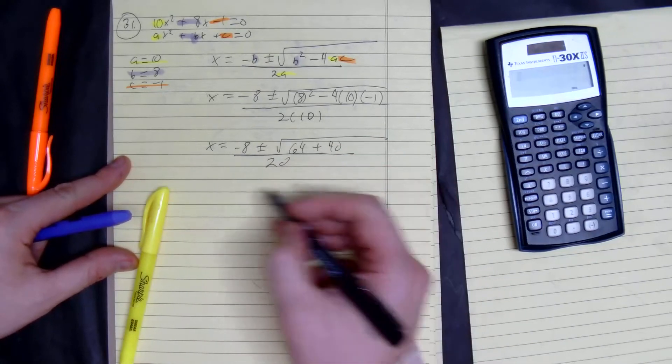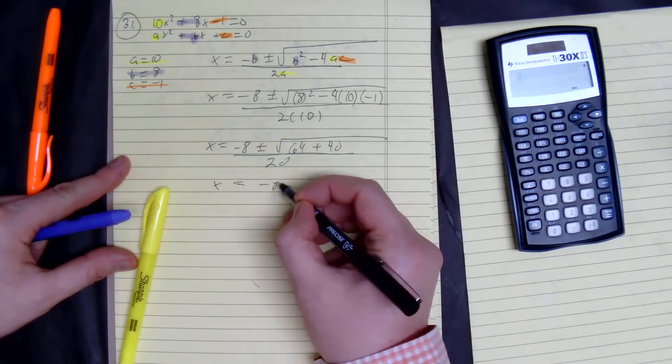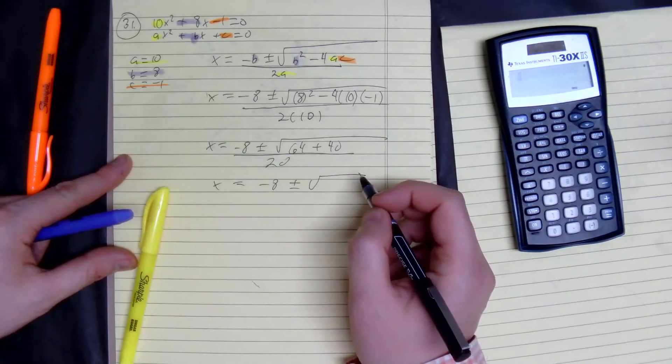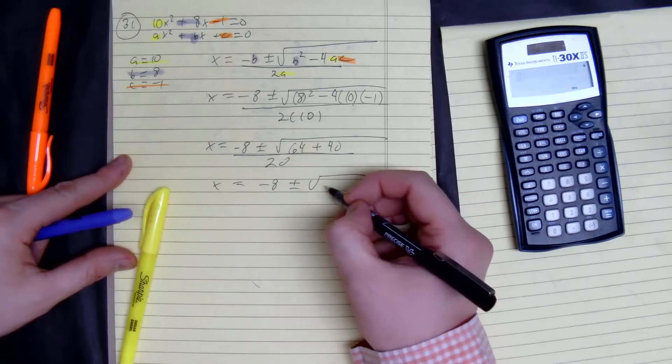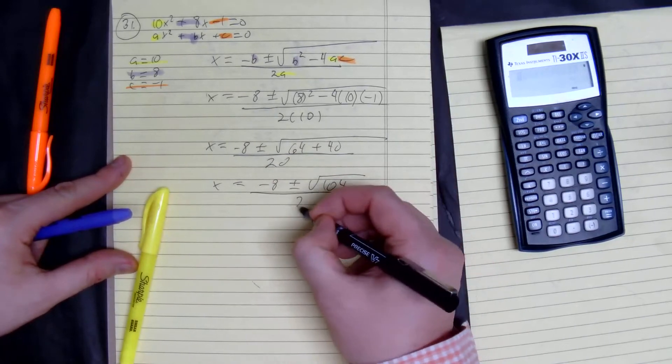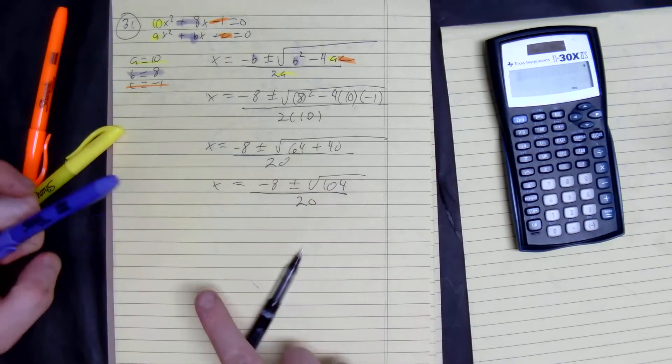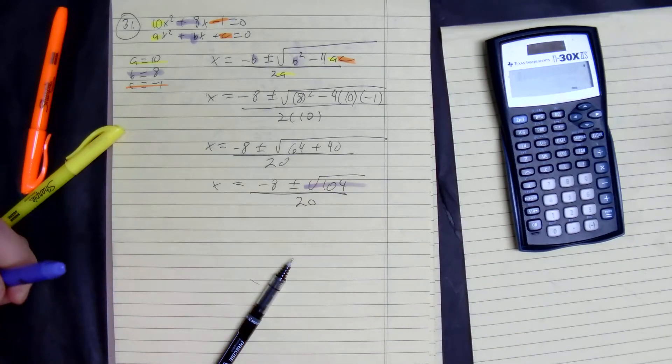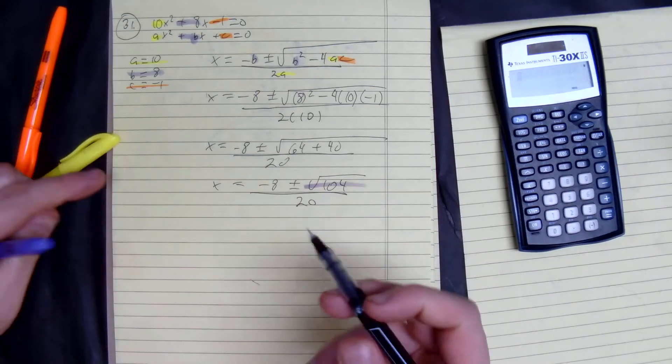And then we can simplify the radical. So x equals negative 8 plus or minus the square root of 104 divided by 20. I'm going to see if I can simplify this, take any numbers out, because I always want to make sure I can do that.